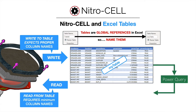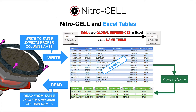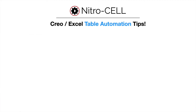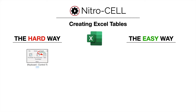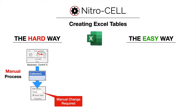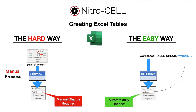You can also use tables as a reference to create a connection into Power Query to do a transformation of that data — for example, to find and replace information or prune it down — and then use that table as a reference for reading in changes and imparting those changes into Creo. In NitroCell, we have a table create function where you can specify the name of the table you want to create, and it will create a default table and automatically set the name to the defined name that you give it.